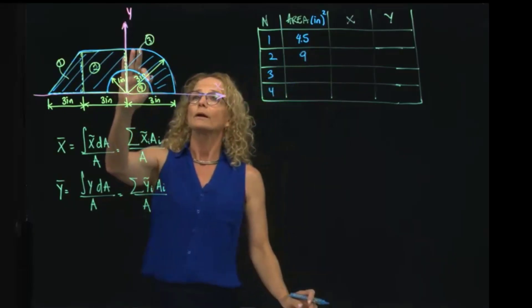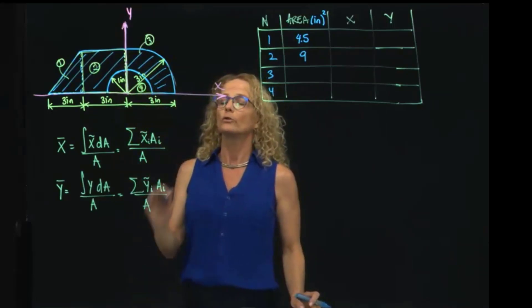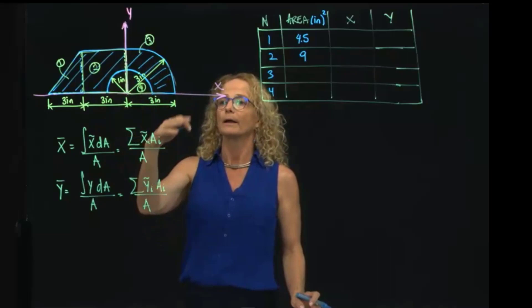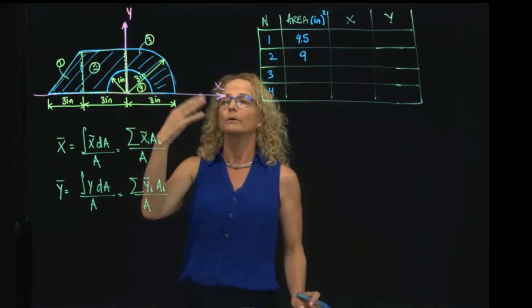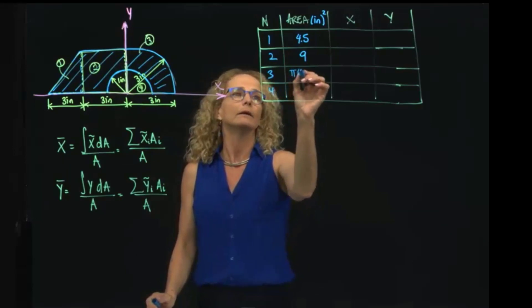The third one is a circular plate, but only one fourth. So you know that the area of a circular plate is pi r squared, but we divide it by 4, will be pi, and the r is 3 squared, and we divide it by 4.